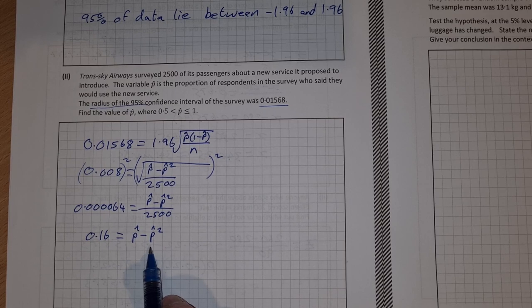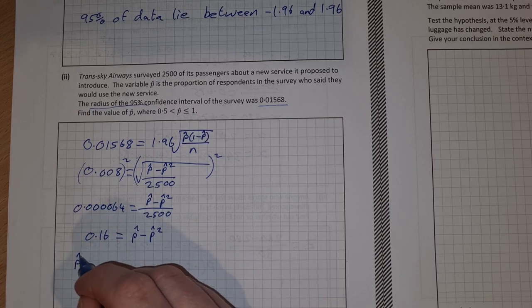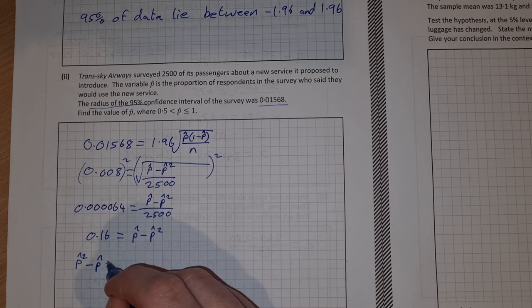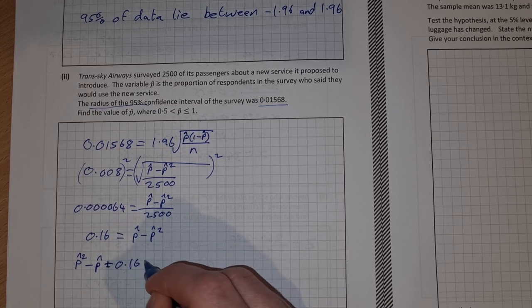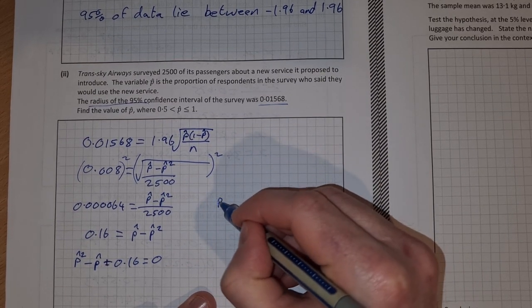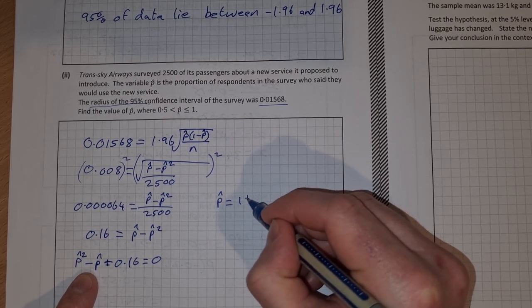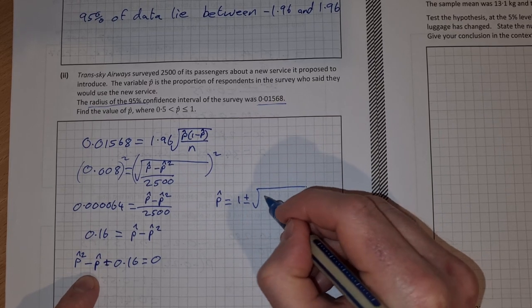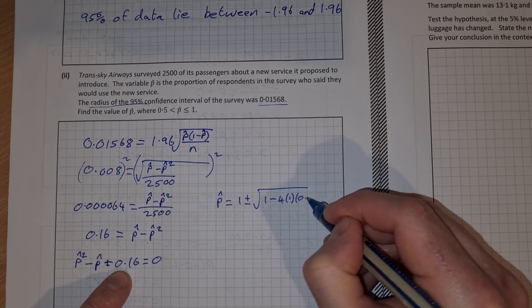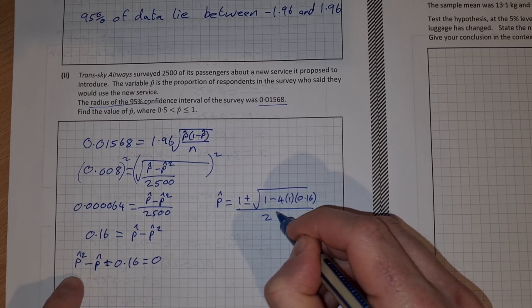We bring everything to one side to get a quadratic equation. We get minus p-hat squared plus p-hat minus 0.16 equals zero. Wait, sorry, minus p-hat squared plus p-hat plus 0.16 equals zero. Then I'd just go ahead and use the minus b formula for this. So p-hat is going to equal minus b, so that's minus minus 1 is 1 plus and minus the square root of b squared. So that's minus 1 squared is 1 minus 4 times 1 times c which is 0.16, all over 2a which is 1, 2 times 1.